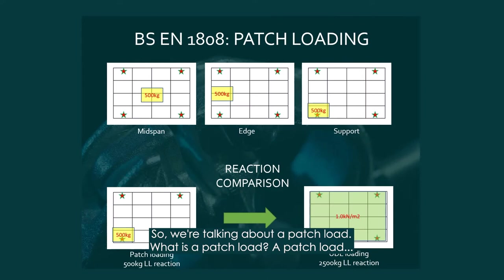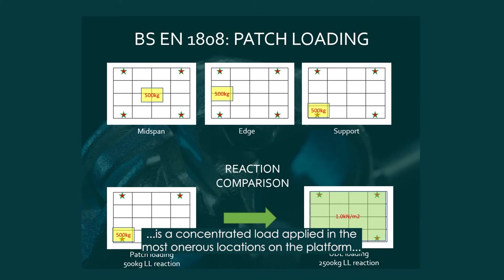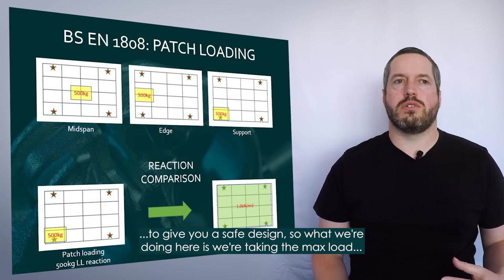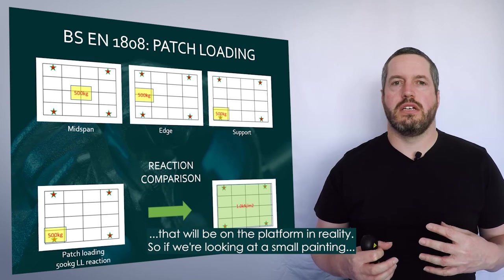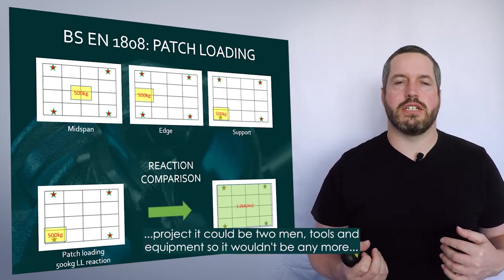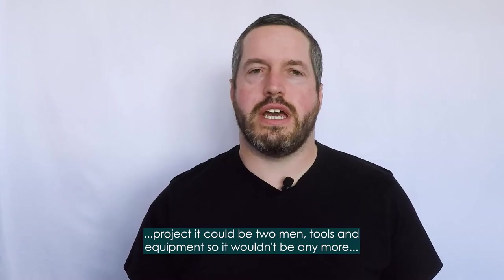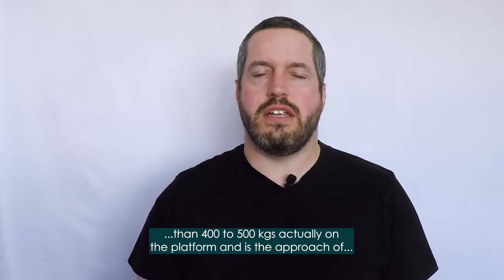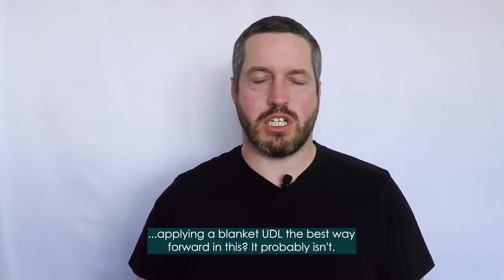So we're talking about a patch load — what is a patch load? A patch load is a concentrated load applied in the most onerous locations on the platform to give you a safe design. What we're doing is taking the maximum load that will be on the platform in reality. For a small painting project it could be two people, tools and equipment, so it wouldn't be any more than 400–500 kg actually on the platform. Is applying a blanket UDL the best way forward in this? It probably isn't.